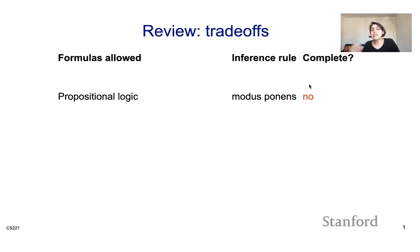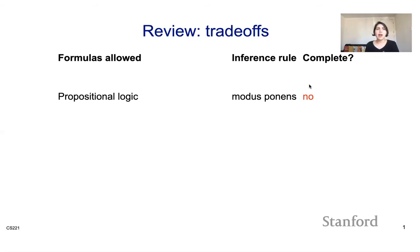The idea is that an inference rule, under a specific set of logical formulas, should be sound and complete. What we have seen is if I apply just modus ponens on propositional logic, I get soundness but I don't get completeness. What that means is, if I have a bunch of formulas that are entailed — that are true — I'm not going to be able to get all of them if I apply modus ponens on propositional logic.